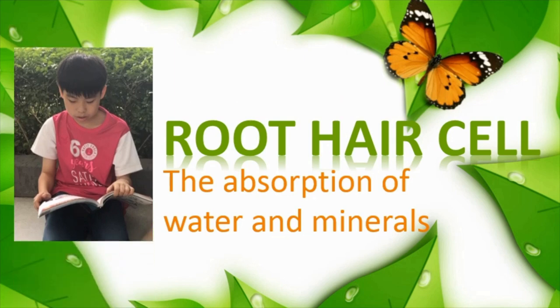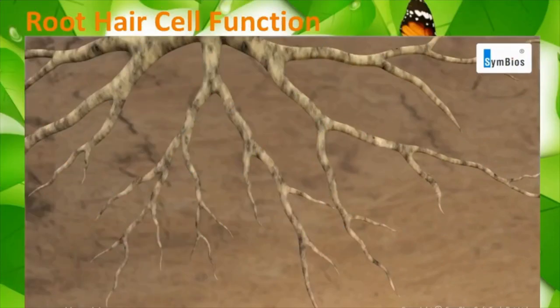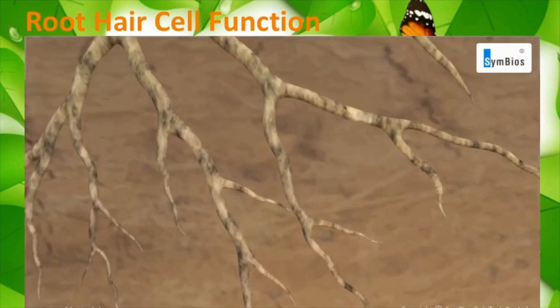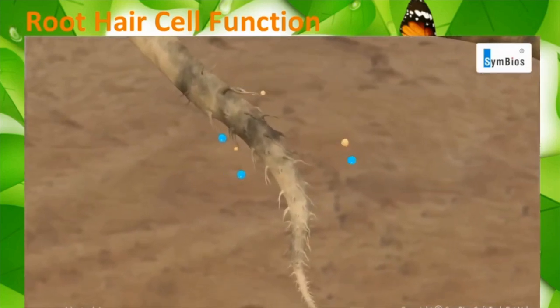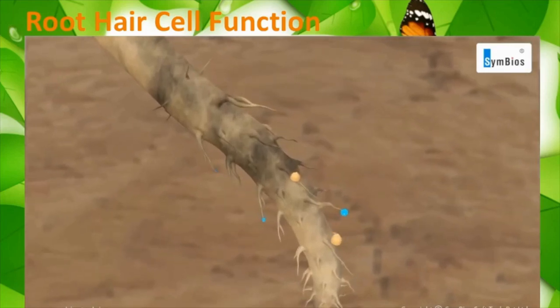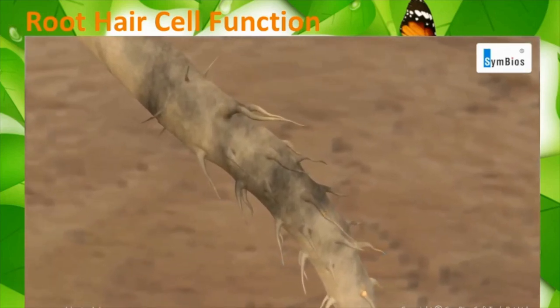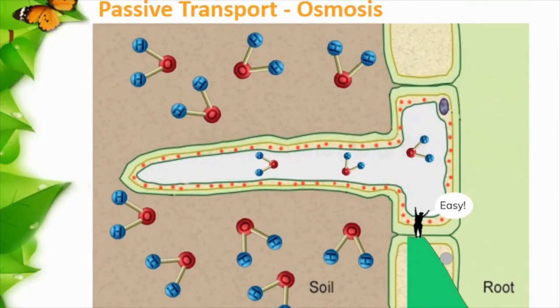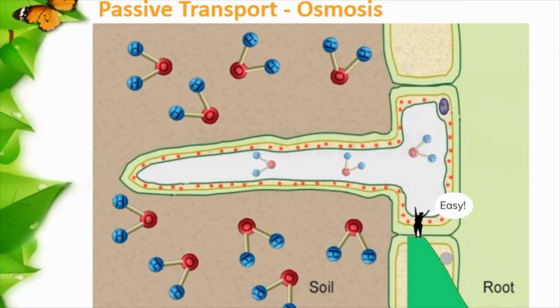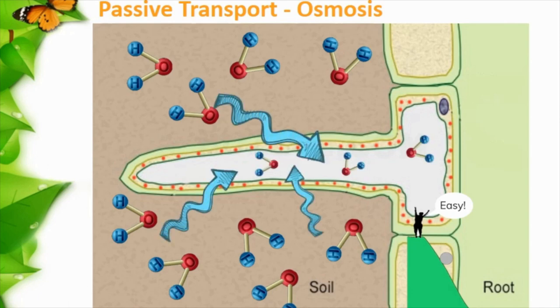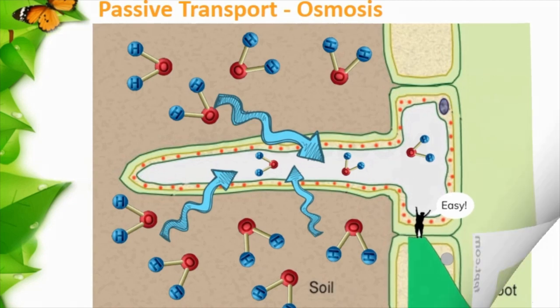Not surprisingly, most of the water and minerals taken in by the plants are absorbed by the root hairs. There are two types of transportation found at the root hair: passive and active transportation. Water passes from the soil, where there are more water molecules, into the root, where there are less water molecules, using passive transportation called osmosis.